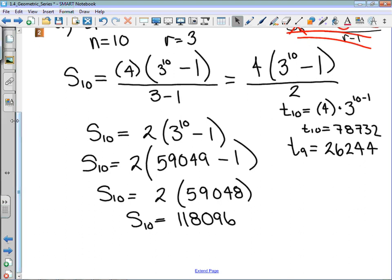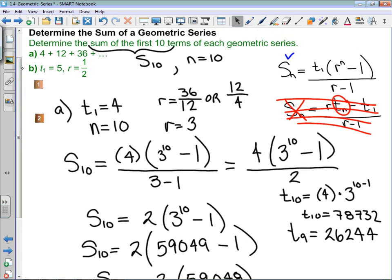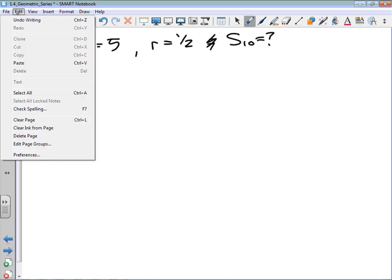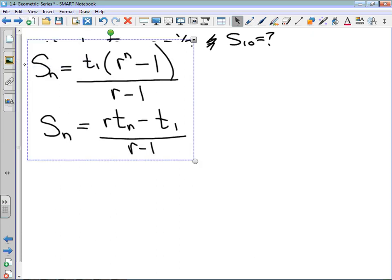Okay, I ran out of room a little bit here, so I'm just going to move this onto a new page. Part B told me that term 1 was 5, the common ratio was 1/2, and we're looking for the sum of 10 terms.